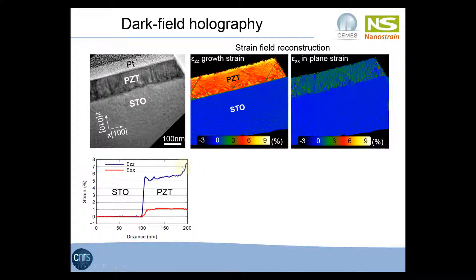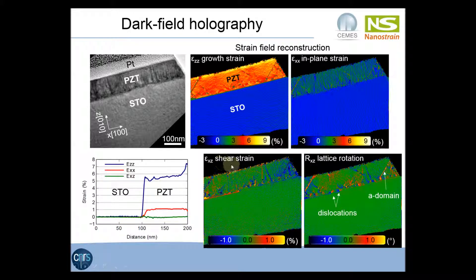This means the layer is relaxed. There is an increase of strain near the surface, which is likely due to gallium implantation during sample preparation. The in-plane strain is about 1%, corresponding to the difference between the A parameter of the PZT and the STO parameter — confirming the layer is relaxed. We can also calculate a map of the shear strain and the rotation of the lattice. Rotation loops at the interface are due to dislocations, which is why the film is relaxed. There is also a rotation inside a small A domain, but the resolution here is about 5 nm, too large to clearly resolve the domain.